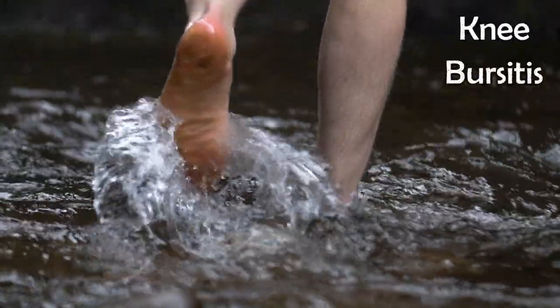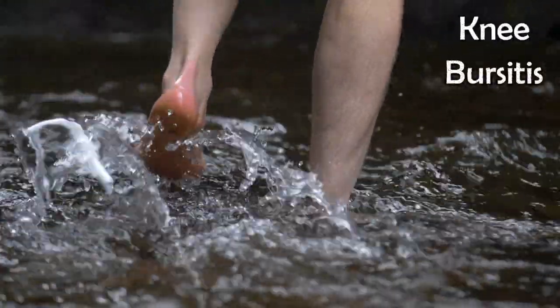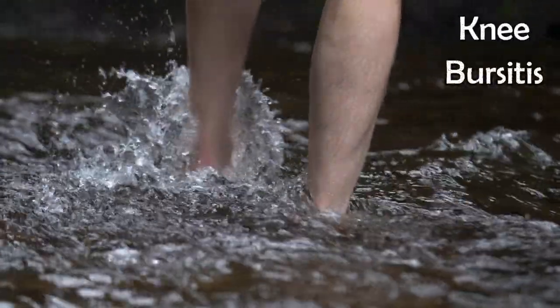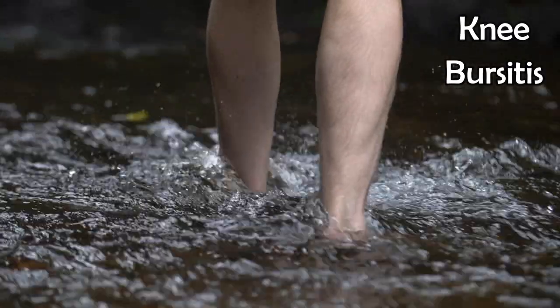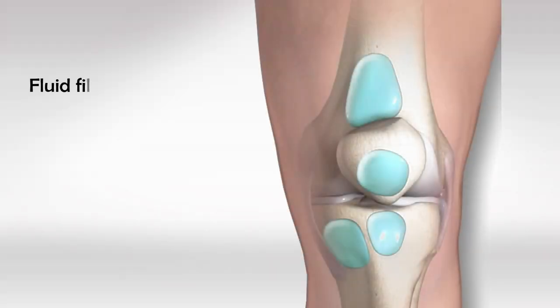Welcome back. In this video we'll talk about the knee bursa and bursitis. These are fluid-filled sacs around the knee, and they're sometimes connected to the knee joint, so they will have the same fluid as the fluid inside the joint. They're commonly found in between the skin and tendons, or between the tendons and bones.